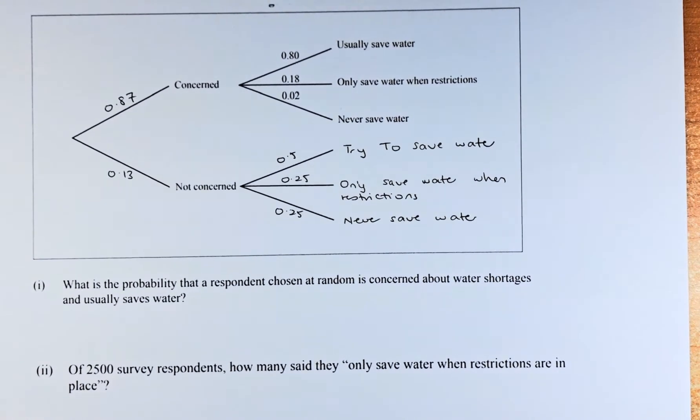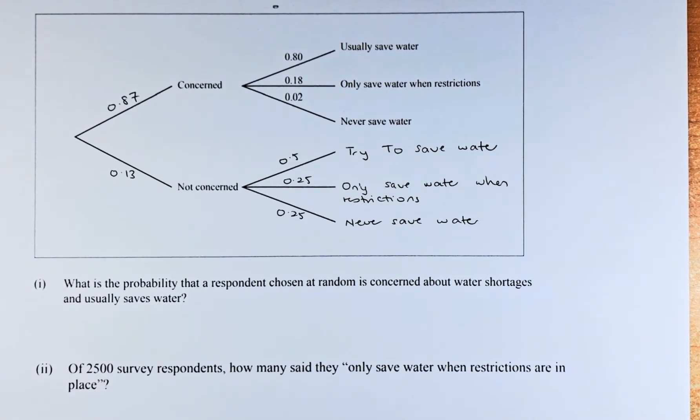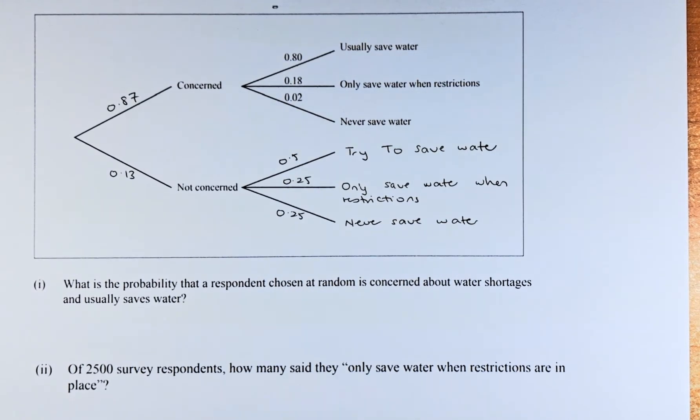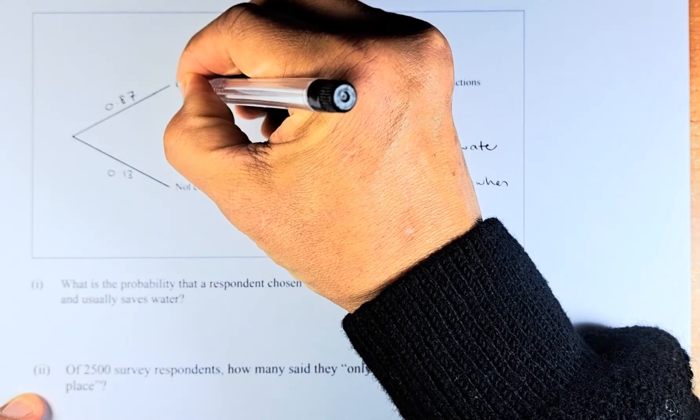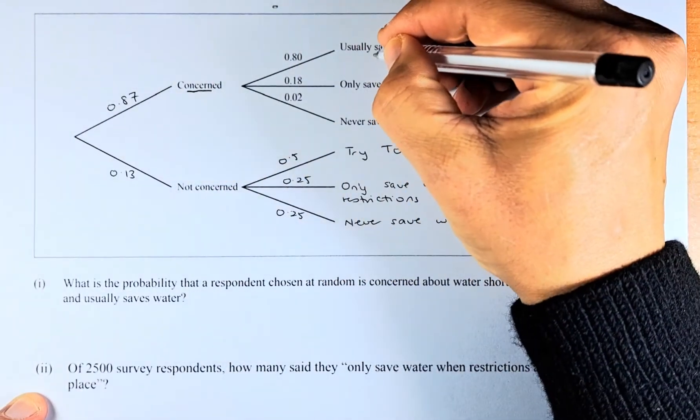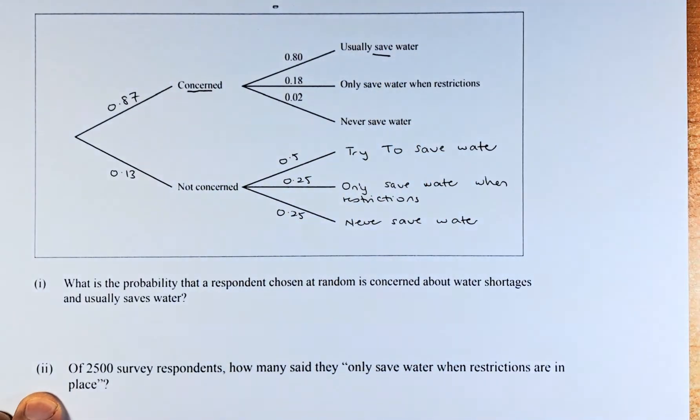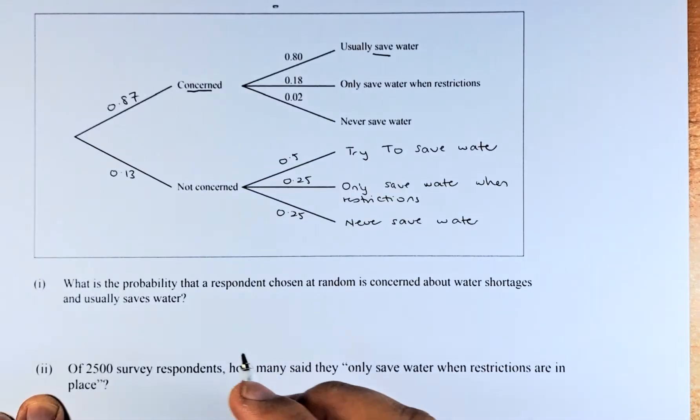The question is, what is the probability that the respondent chosen at random is concerned about water shortages and usually save water? So to do that, we are going to do concern and usually save water. To calculate the tree that leads to them, we multiply the probability to it.